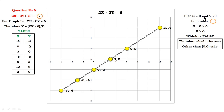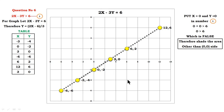For x = 0 and y = 0 substituted into the original inequality, we get 0 plus 0 greater than 6, that is 0 greater than 6, which is false. Therefore, shade the area on the other side from the point (0, 0). Since (0, 0) lies on the left side, you have to shade the right-hand side of this dotted line graph.